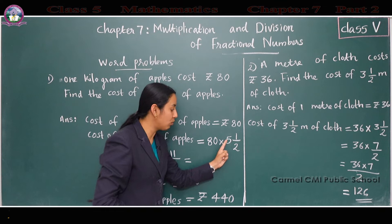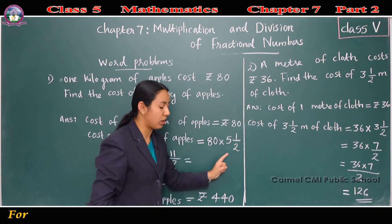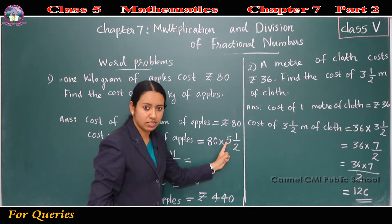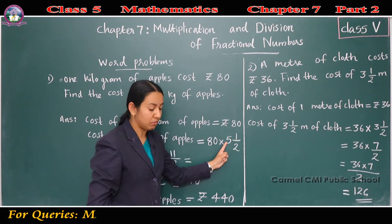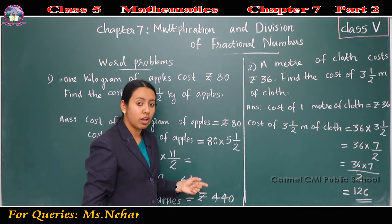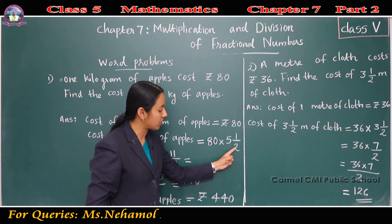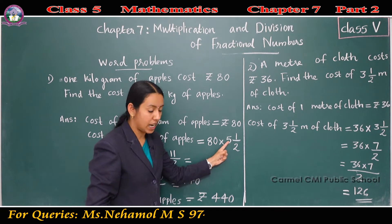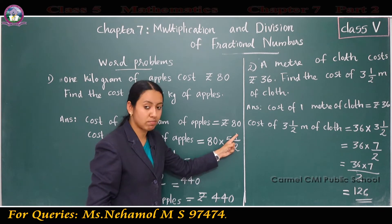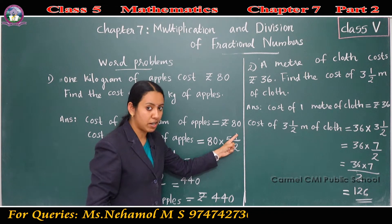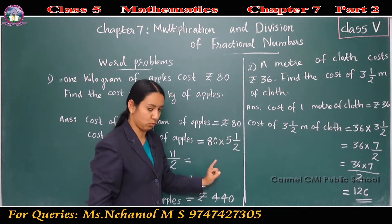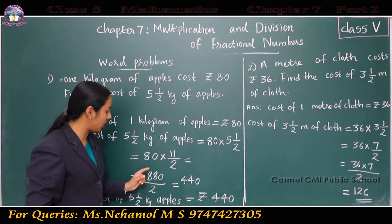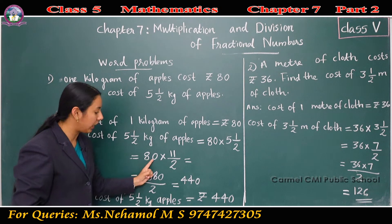80 into 5½. We know that 5½ is a mixed fraction, so we can convert it to an improper fraction. 2 fives are 10, plus 1 is 11. So 11/2 is the corresponding improper fraction.